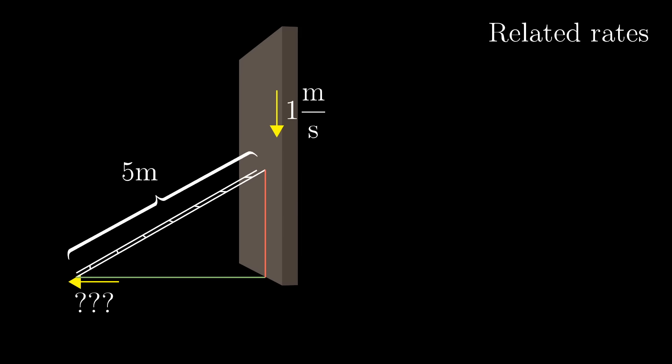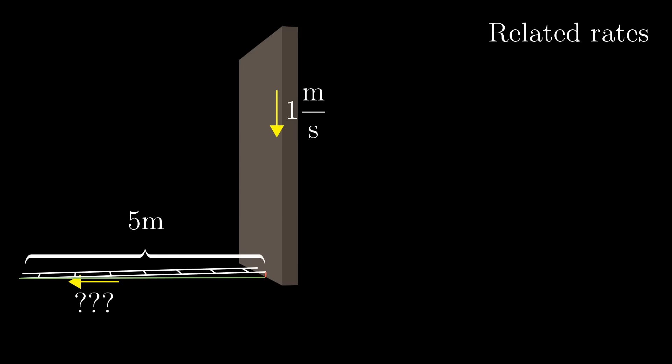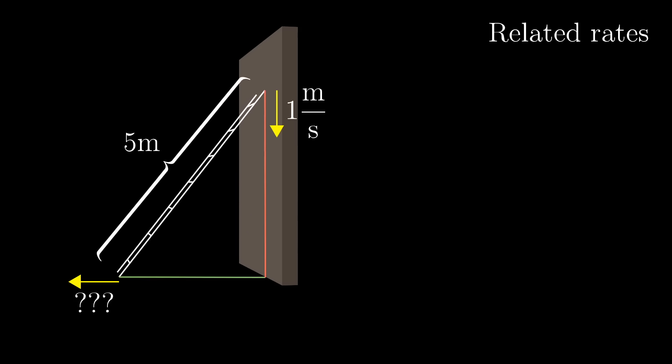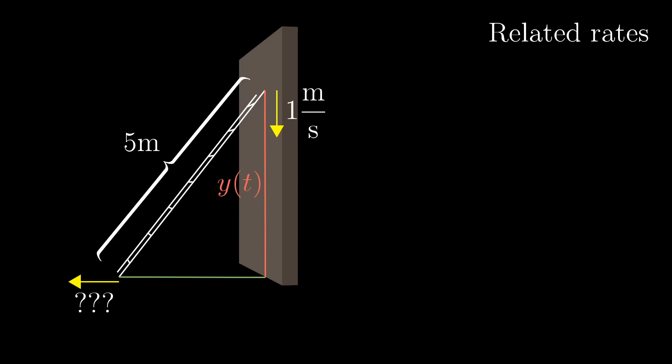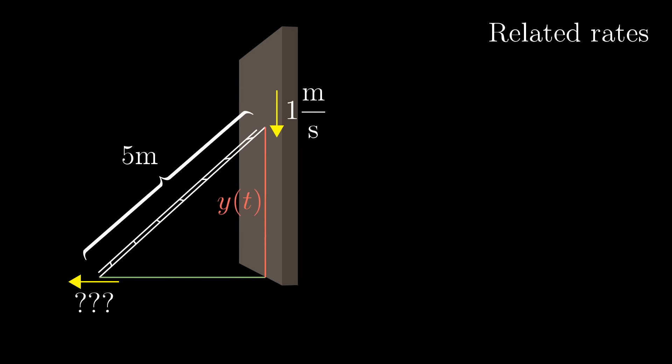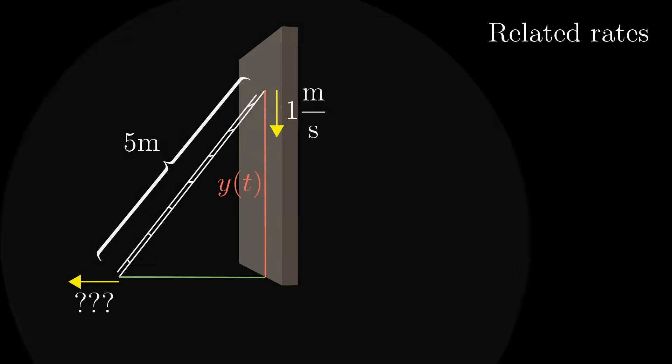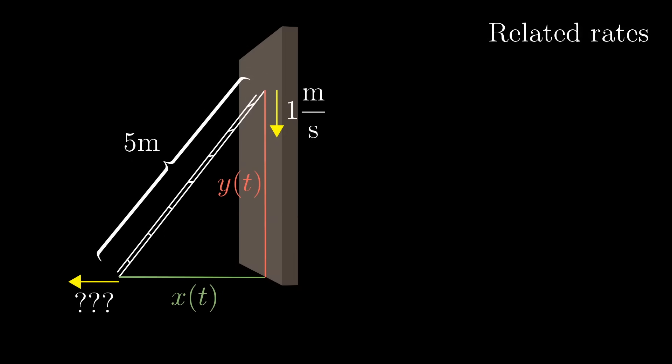It's interesting, right? That distance from the bottom of the ladder to the wall is 100% determined by the distance from the top of the ladder to the floor. So we should have enough information to figure out how the rates of change for each of those values actually depend on each other. But it might not be entirely clear how exactly you relate those two. First things first, it's always nice to give names to the quantities that we care about. So let's label that distance from the top of the ladder to the ground y(t), written as a function of time because it's changing. Likewise, label the distance between the bottom of the ladder and the wall x(t).